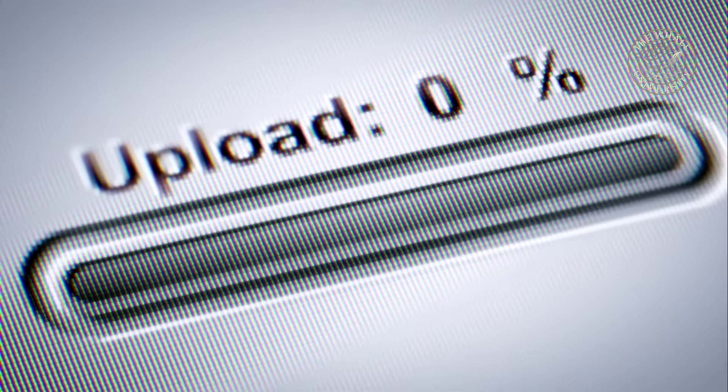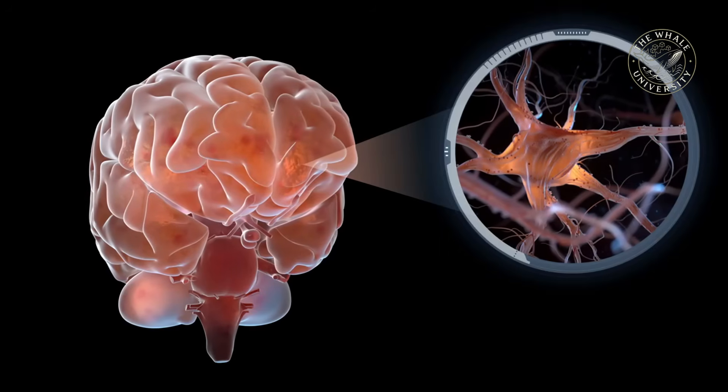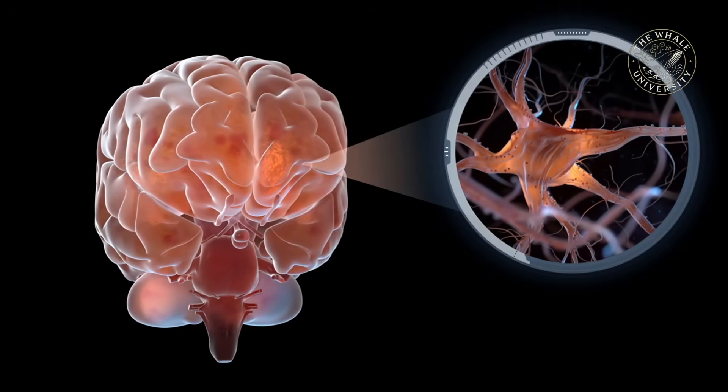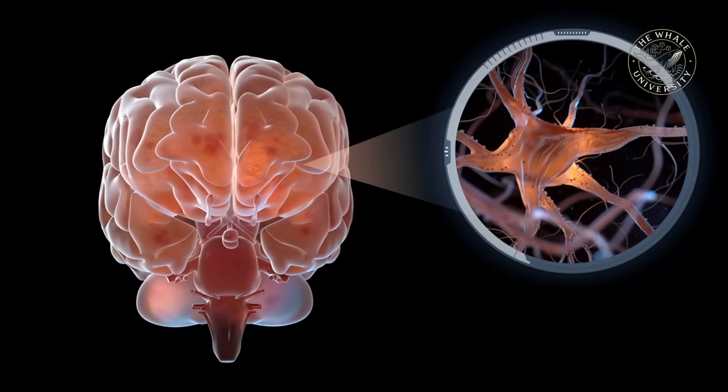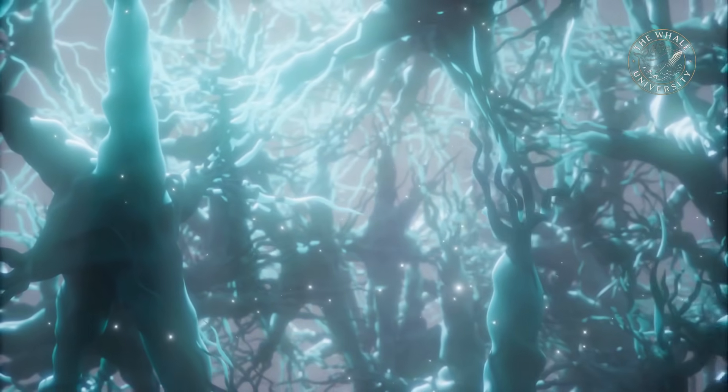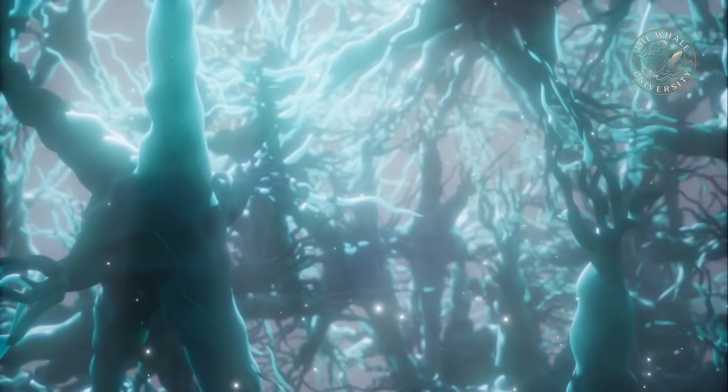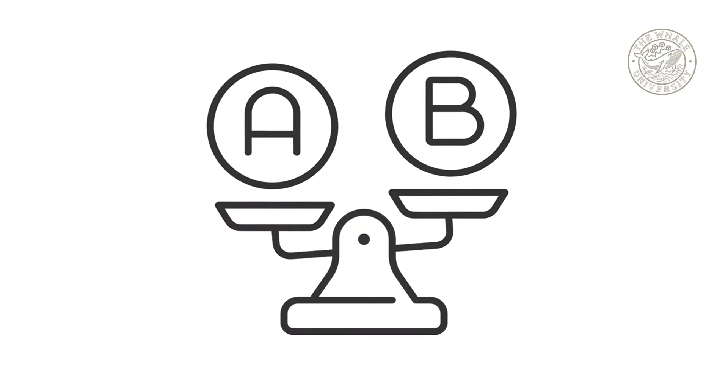This is where the idea of gradual uploading comes in. What if we could replace your neurons one by one with artificial ones that perform the same function? Your consciousness would, in theory, remain intact throughout the process, slowly migrating from a biological to a digital substrate.